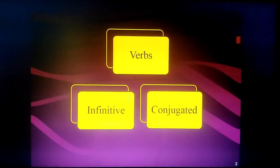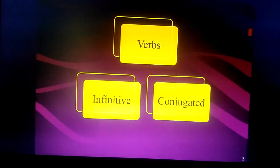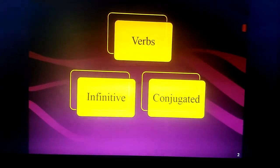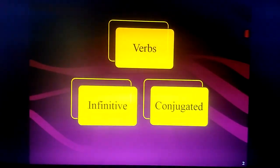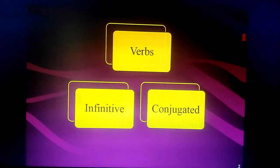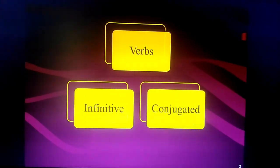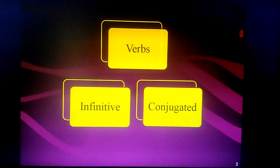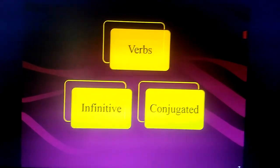Verbs are in two forms in any given sentence. It is either in an infinitive form or a conjugated form. An infinitive verb is a whole verb where you don't define who is doing the action or when the action is happening. And when you define these two things — who is doing the action, that is your subject or subject pronoun, and when the action is happening, that is the tense — you are doing nothing but conjugating the verb.